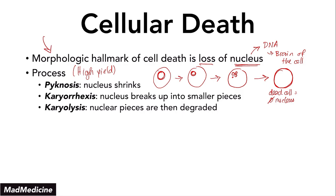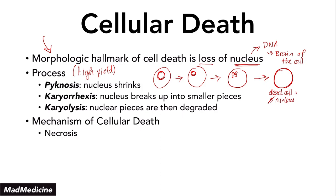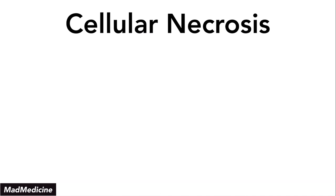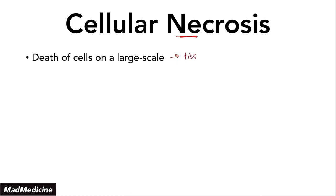Now, the mechanism of cellular death is also very important. The two main mechanisms that happen when our cells are dying are going to be necrosis and apoptosis. Cellular necrosis is the death of cells at a large scale — a necrotic mechanism of cell death occurring at the tissue level. You might have heard that tissue necrosis can occur via many different mechanisms, but that's essentially what we're talking about: death of cells on a large scale.